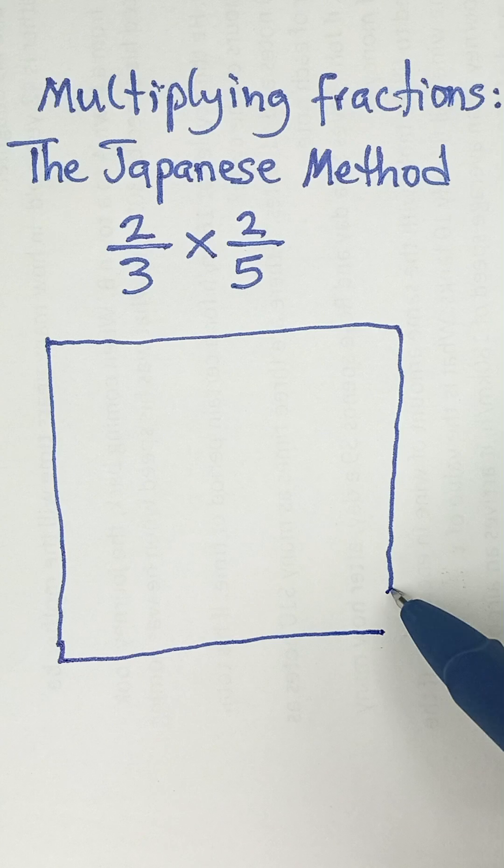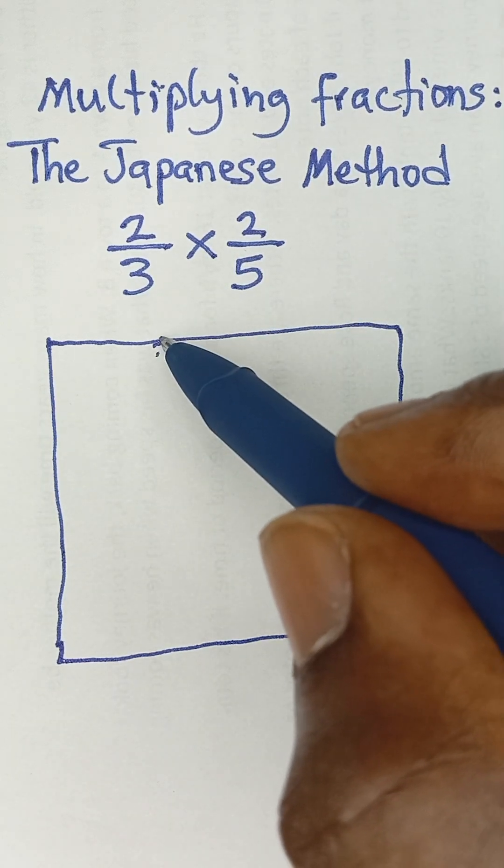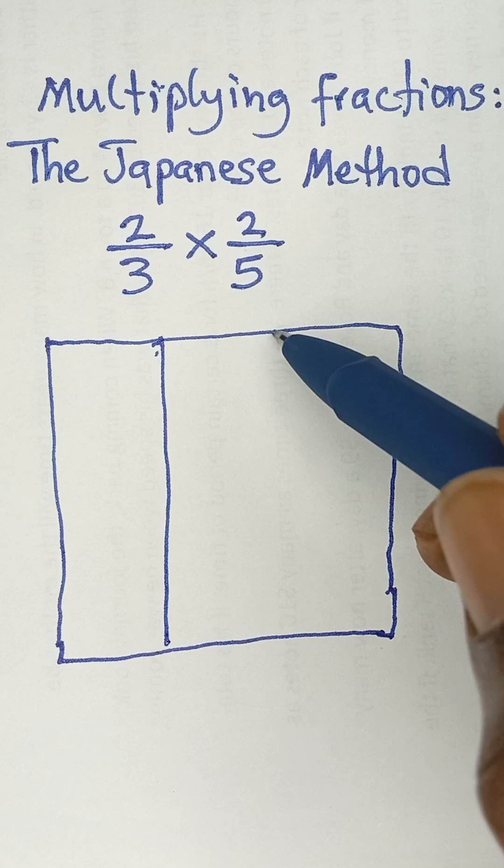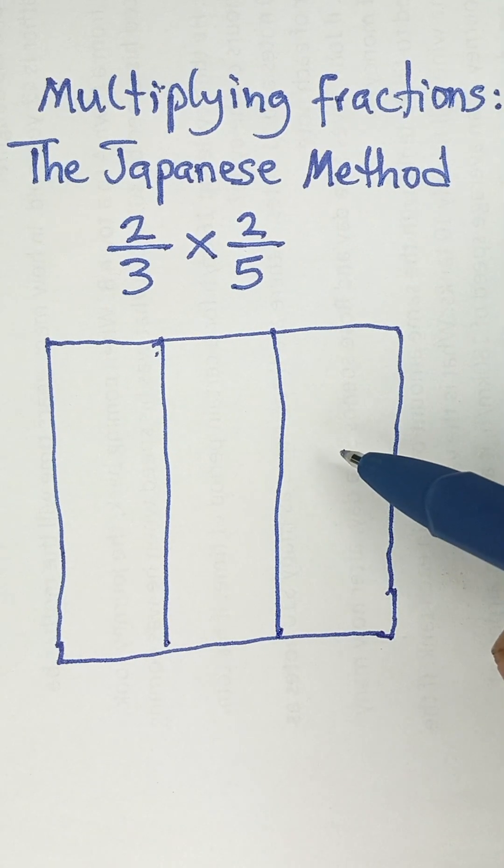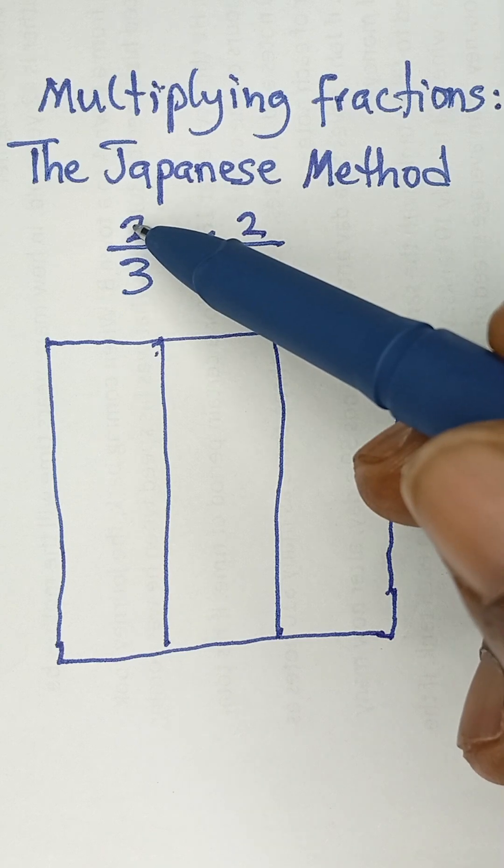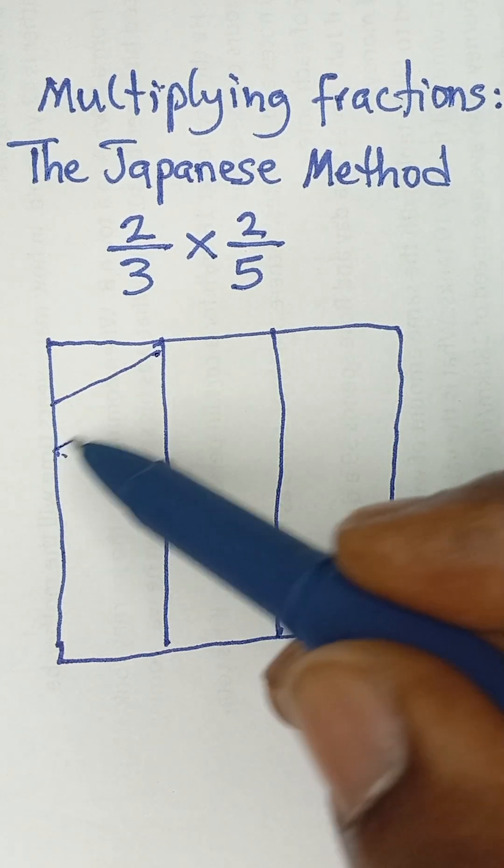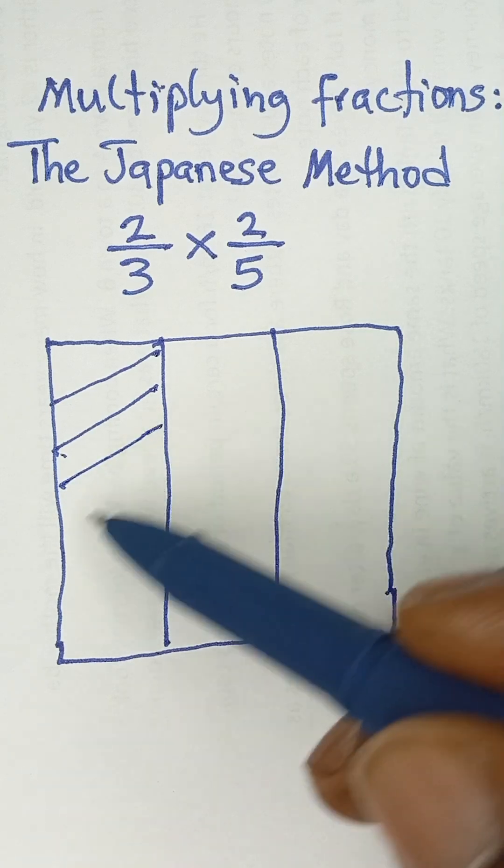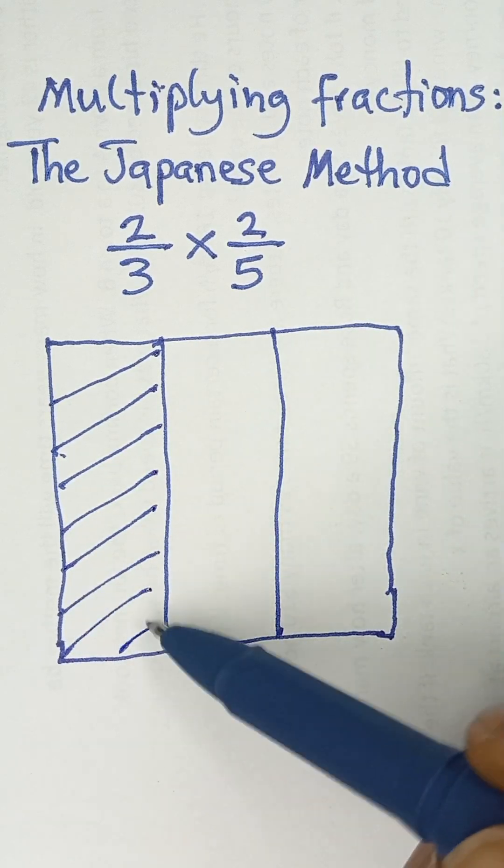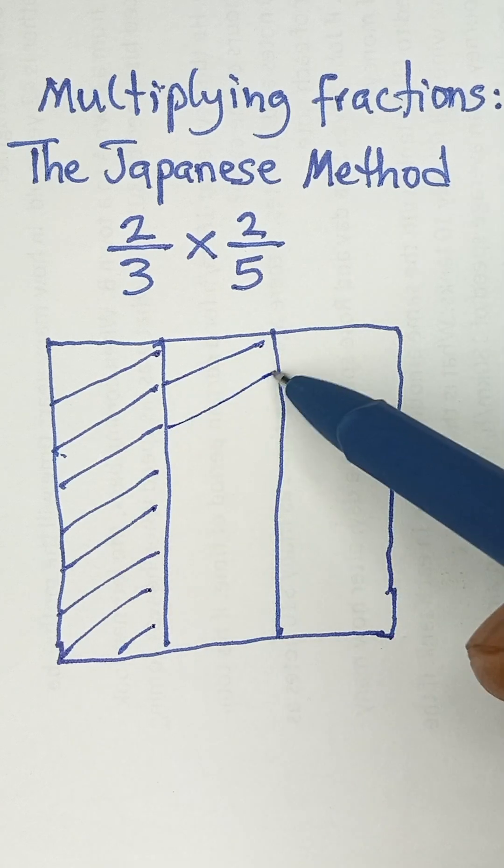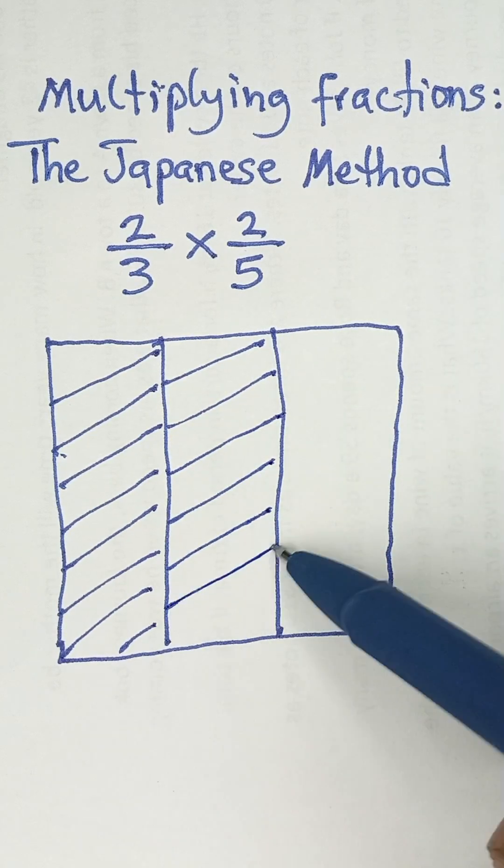Because of the 3 here, we're going to divide the box into three parts. After dividing the box into three parts, we select two of the parts because of the 2 in the numerator. So I'm going to select two parts. I have selected two of the three parts because we have 2/3.